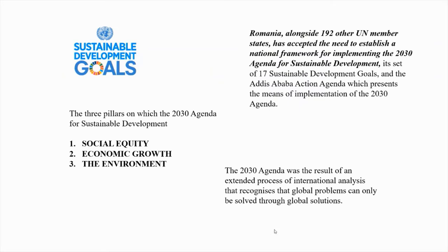Romania, alongside 192 other UN member states, has accepted the need to establish a national framework for implementing the 2030 Agenda for Sustainable Development, its set of Sustainable Development Goals, and the Addis Ababa Action Agenda, which presents the means of implementation. The 2030 Agenda was the result of an extended process of international analysis that recognizes that global problems can only be solved through social solutions. The three pillars on which the 2030 Agenda is based are social equity, economic growth, and the environment.